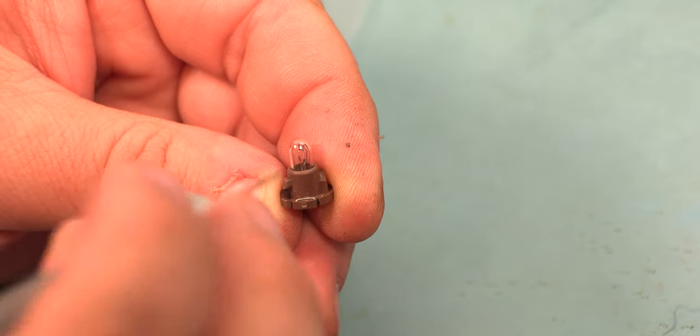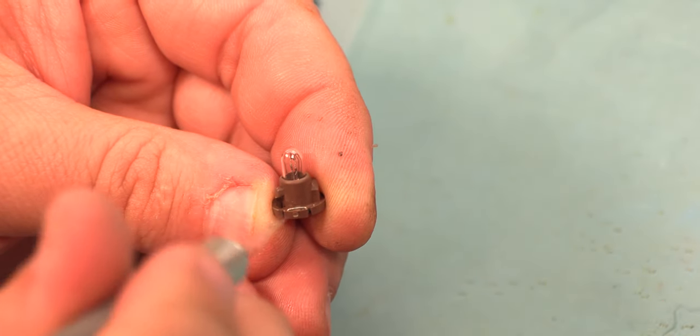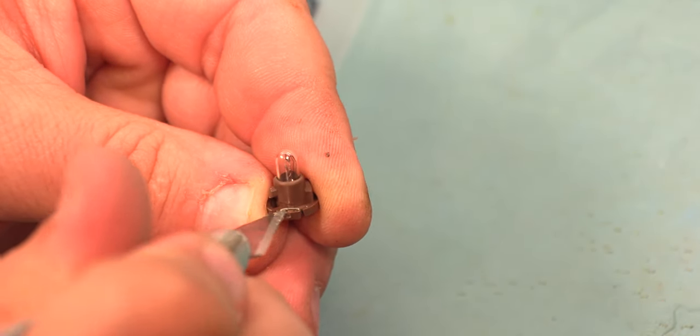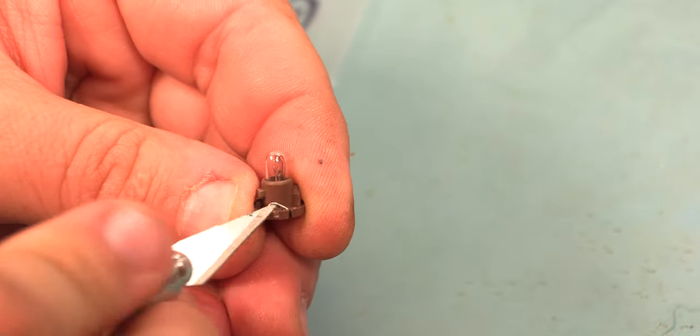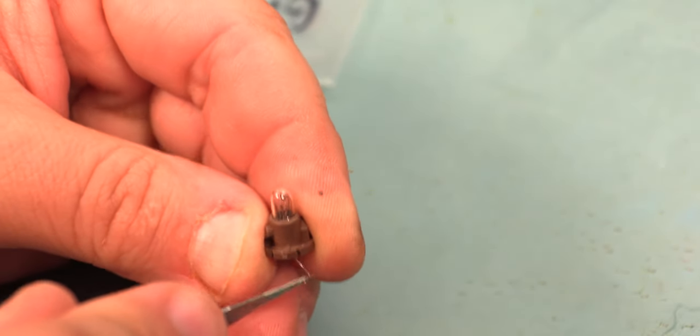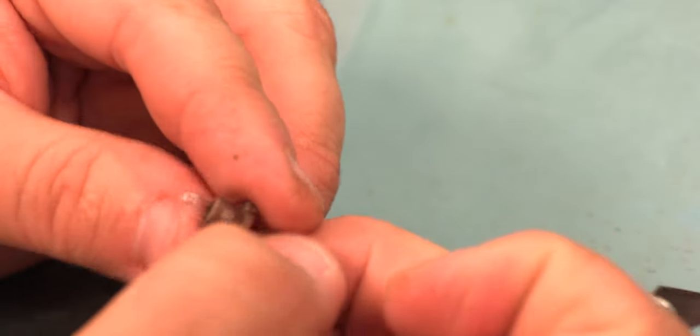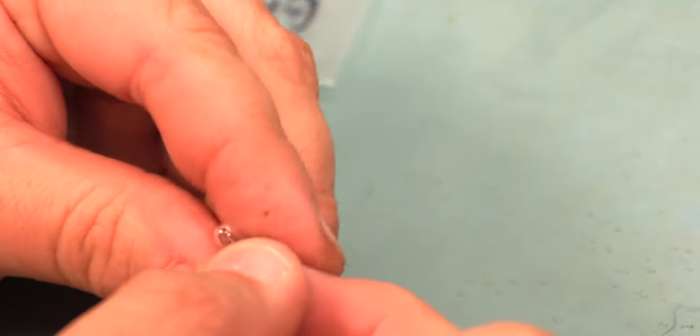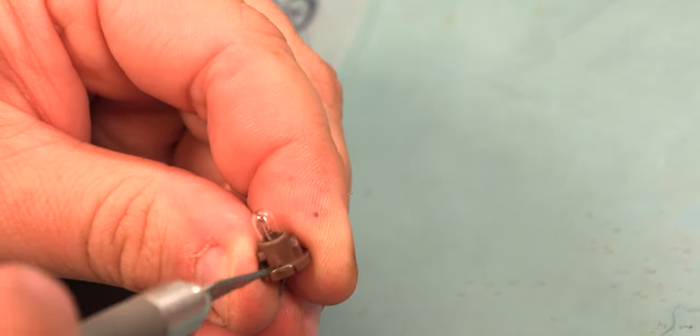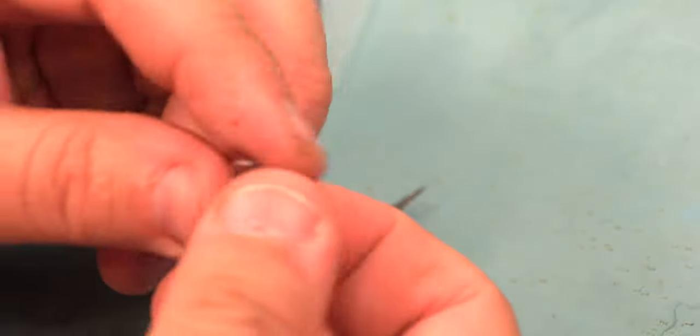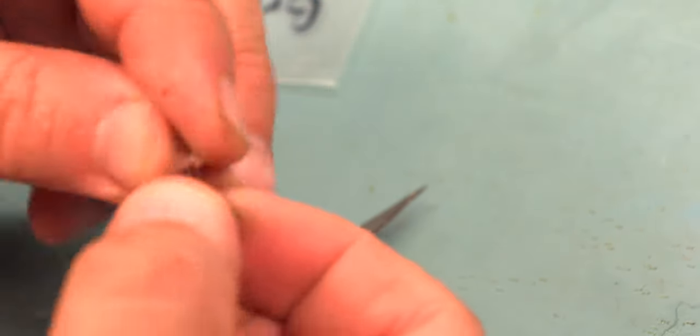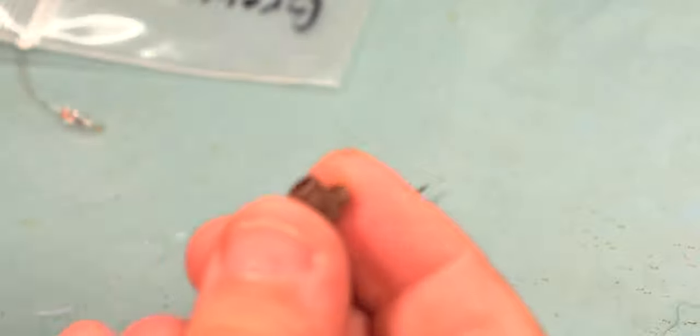In order to get the old bulb out, we'll use an exacto knife, and we'll lift that wire and straighten it out. We'll do the same thing on the other side. Once those two wires have been straightened out, we'll pull the bulb free and set it aside.